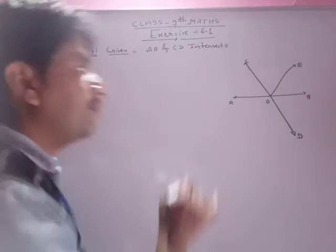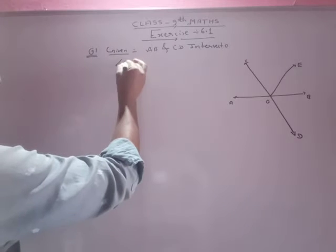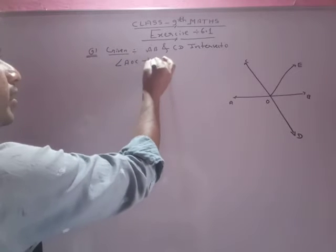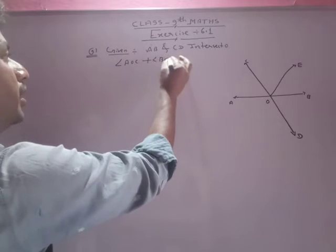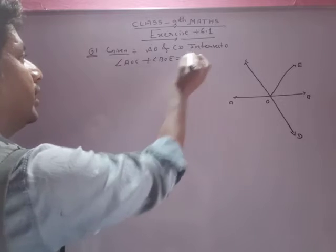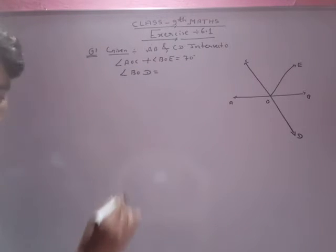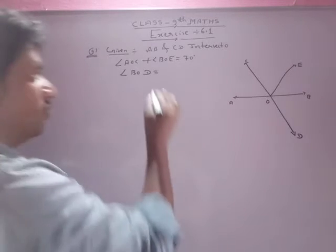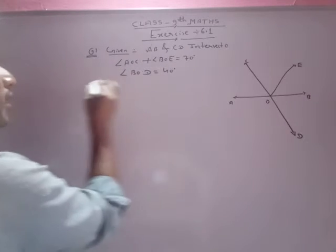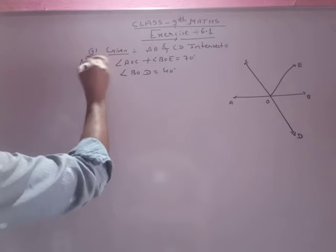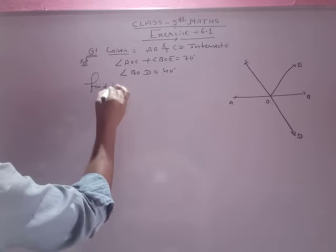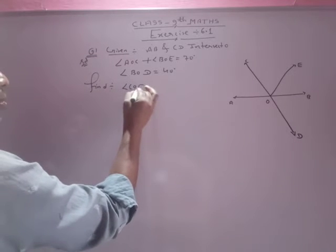It is okay. Then one angle of AOC plus angle of BOE equals to 70 degree. Then angle BOD equals to I think 40 degree. Or find, sir find angle COE.